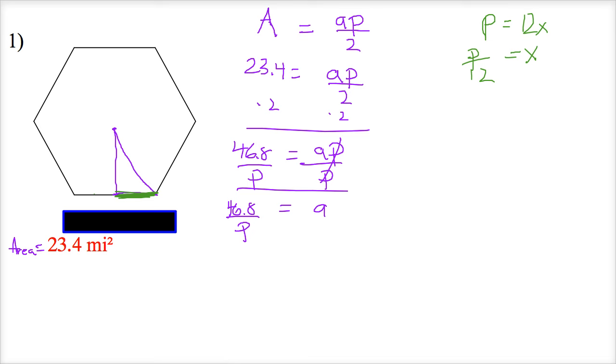So I'll write those over in the corner here. Apothem equals 46.8 divided by the perimeter. And X in this case is P divided by 12.